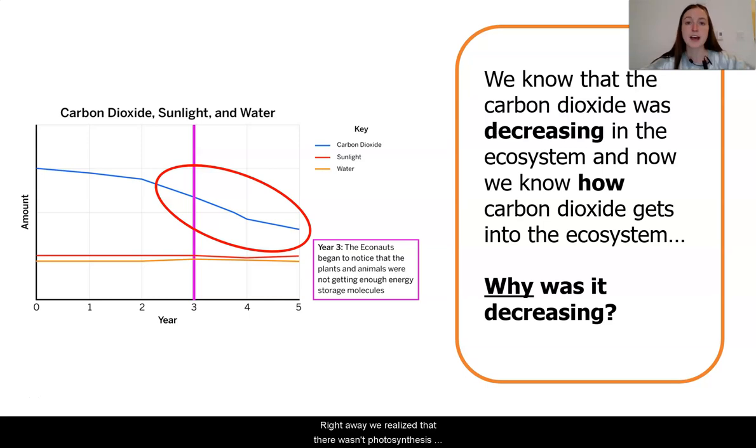Right away, we realized that photosynthesis wasn't happening as often because the carbon dioxide in the ecosystem was decreasing, and this is one of the reactants in the photosynthesis chemical reaction.